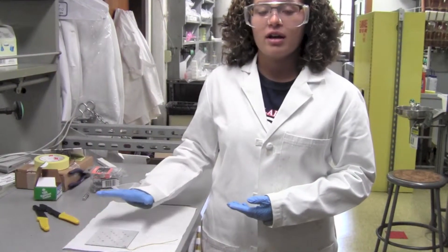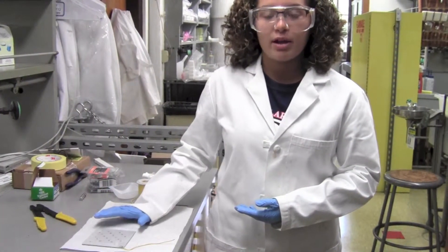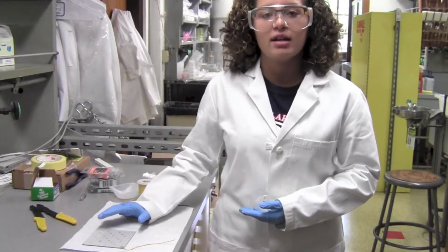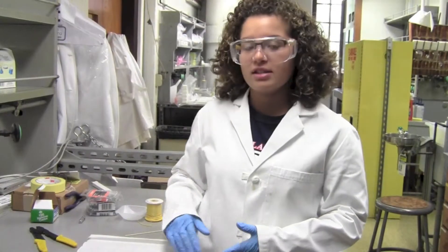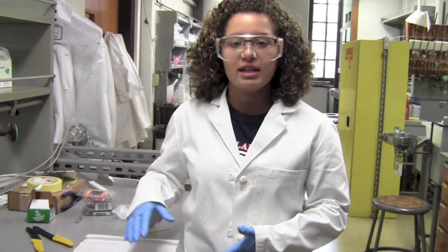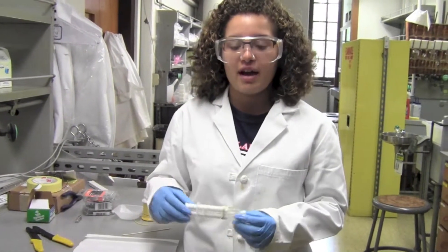You can either let this air dry while you perform other tasks or you can speed up the process by heating it on a hot plate. You will then need to coat the silver epoxy with an insulating layer, such as clear 5-minute epoxy.